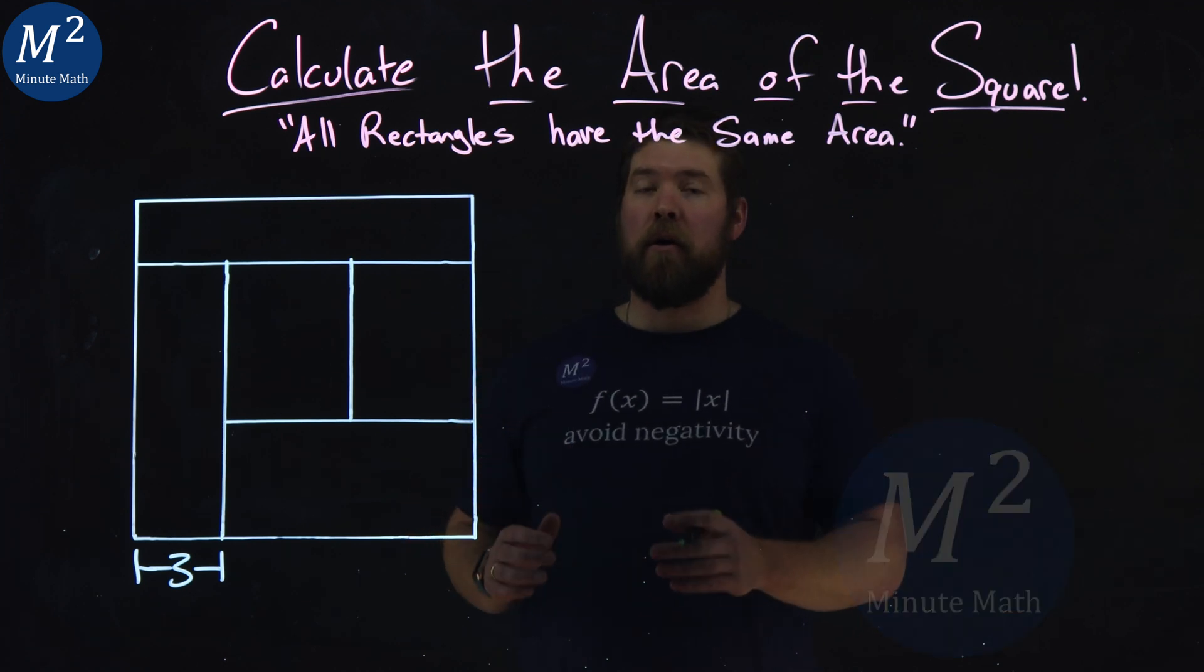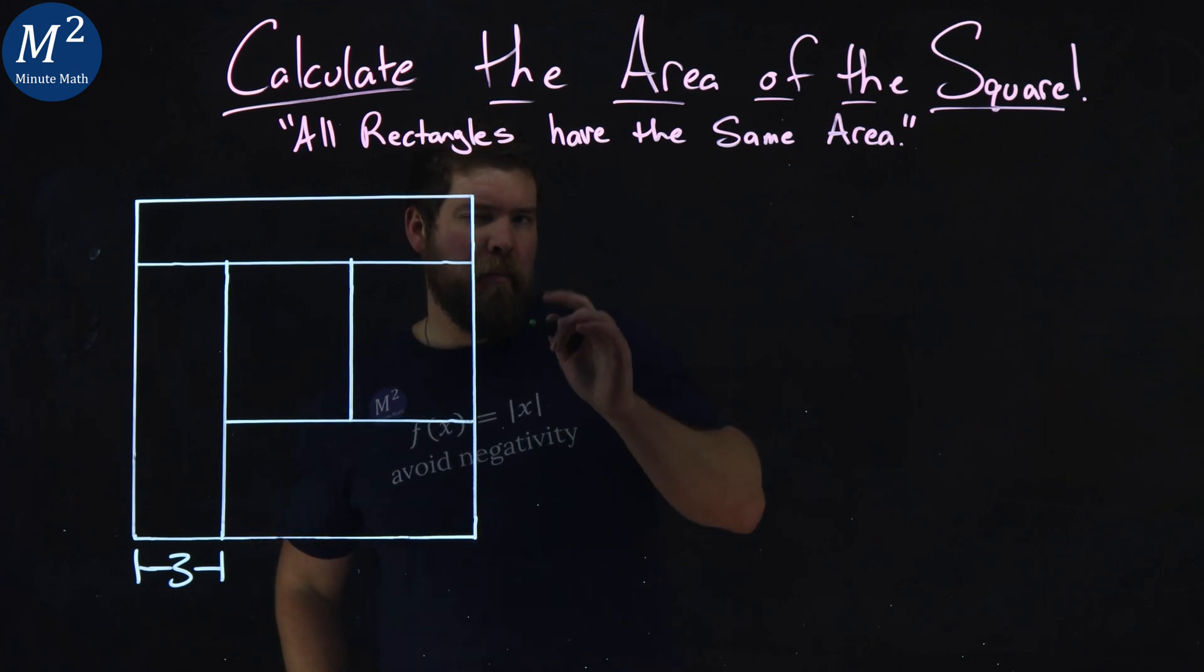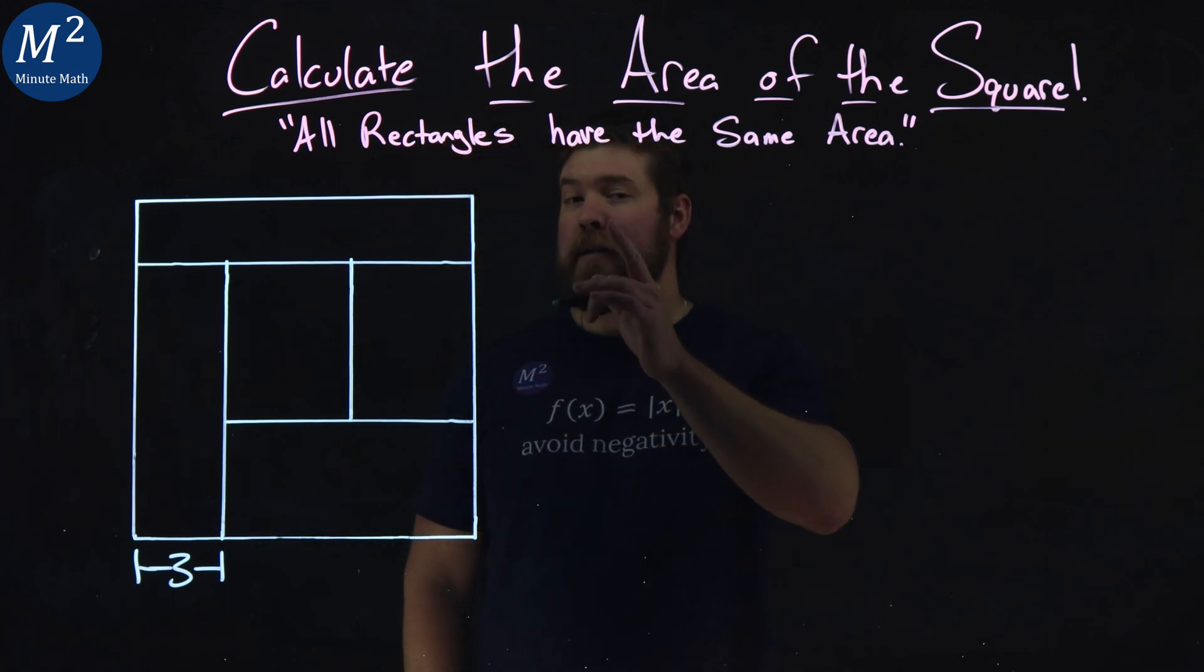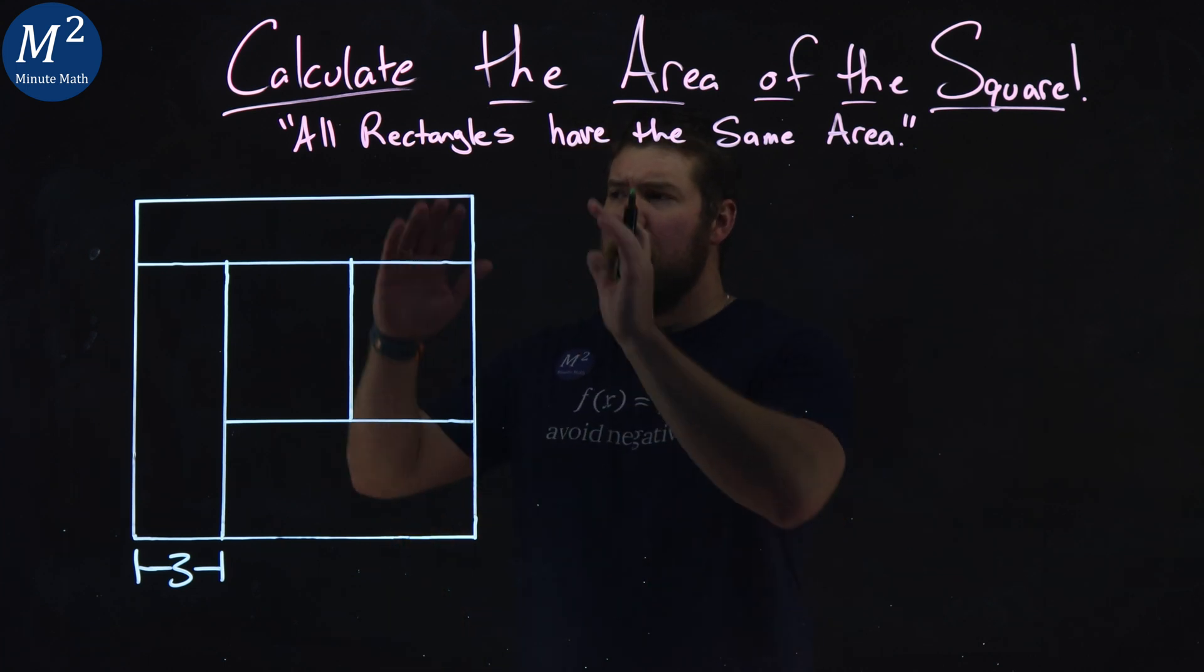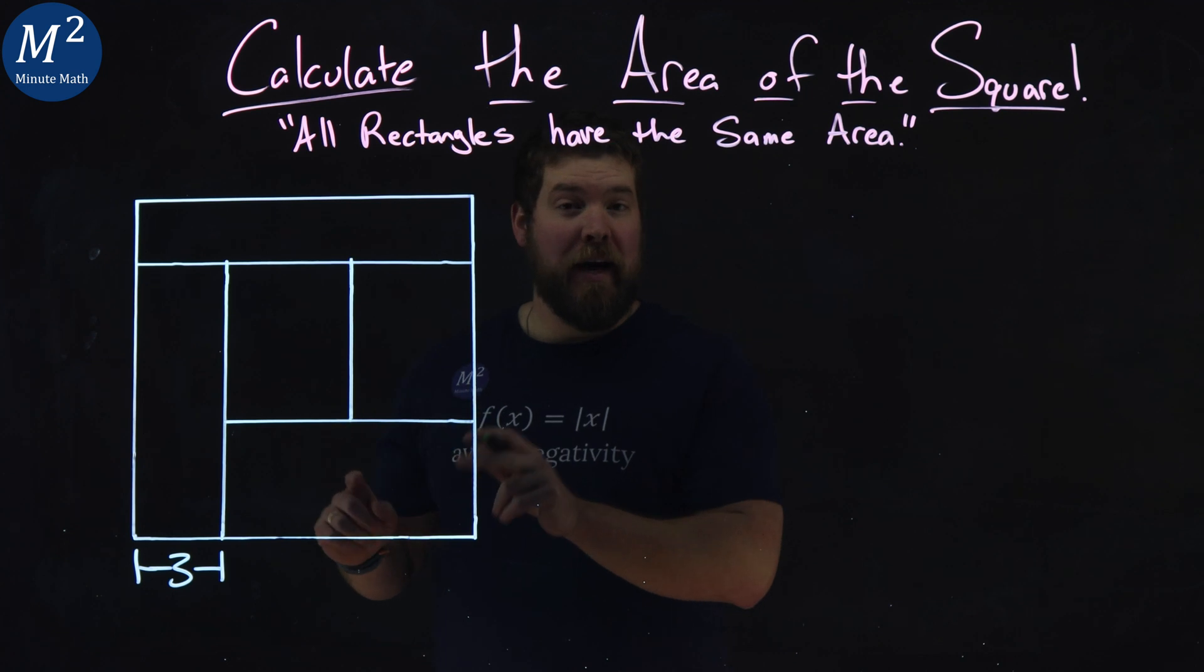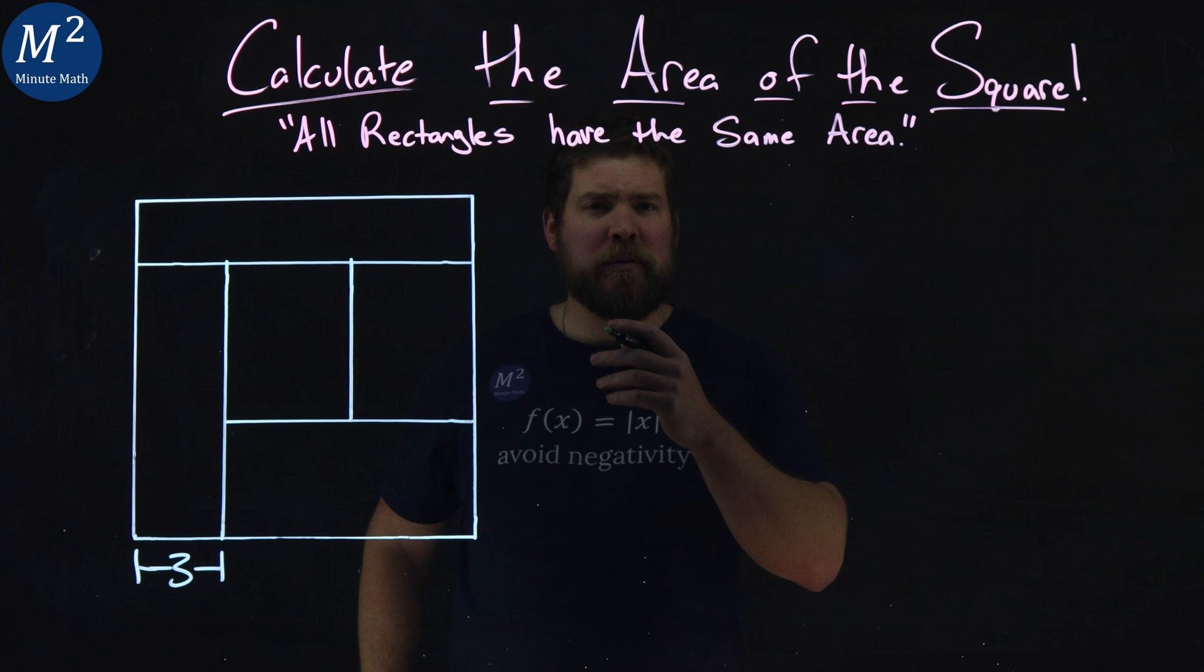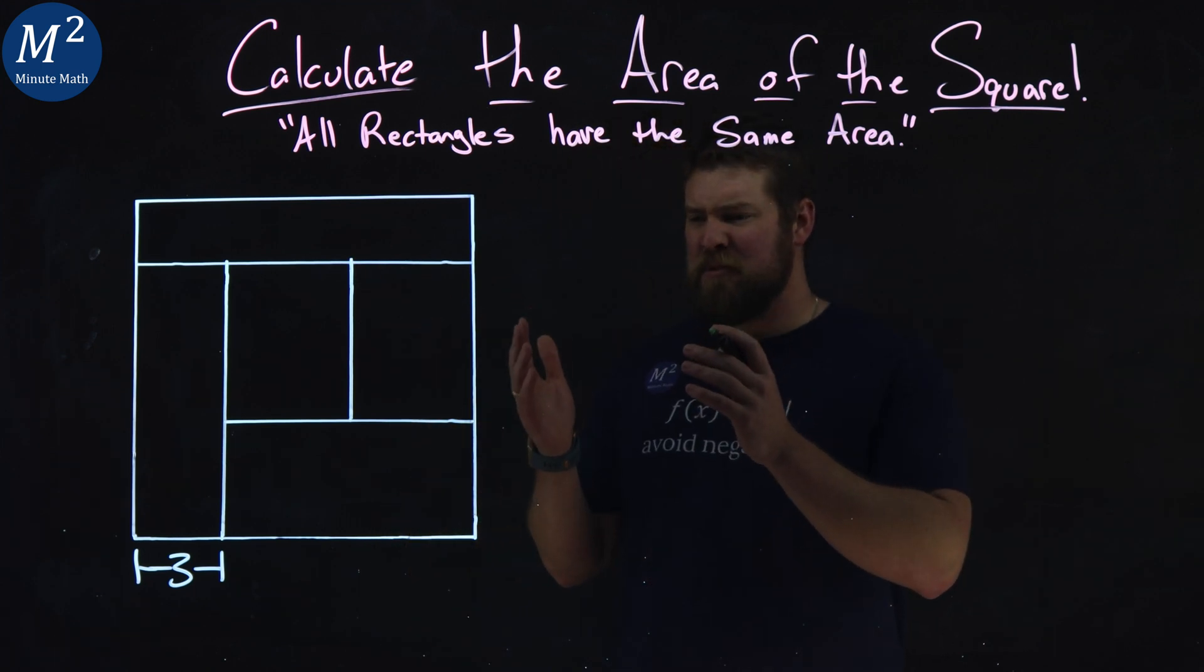We want to calculate the area of our square. We have one big square here. There's some information about the rectangles inside. All the rectangles inside have the same area. We've got a big square, every rectangle inside has the same area, and we know the width of this rectangle here is three, and we want to find the area of the big square.